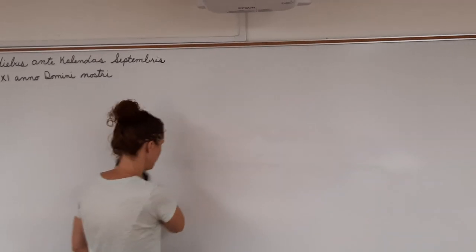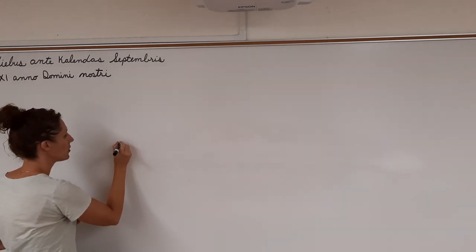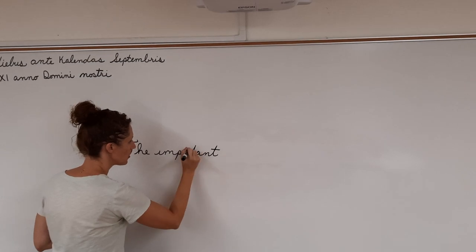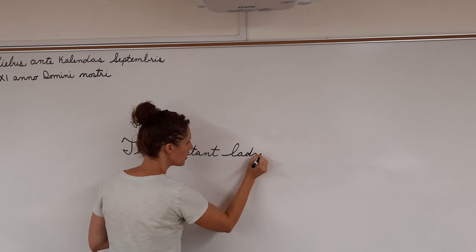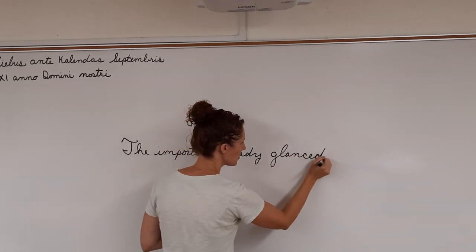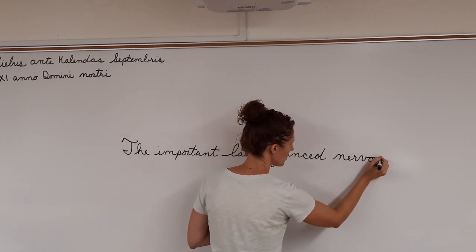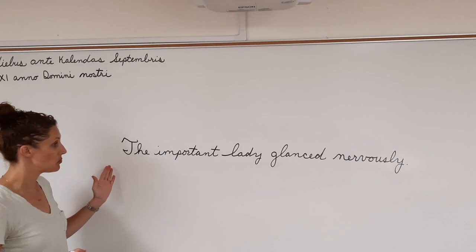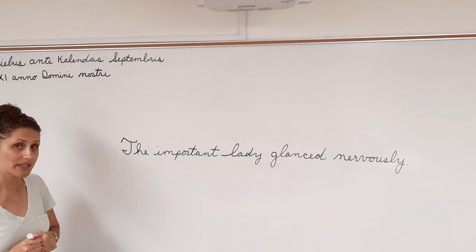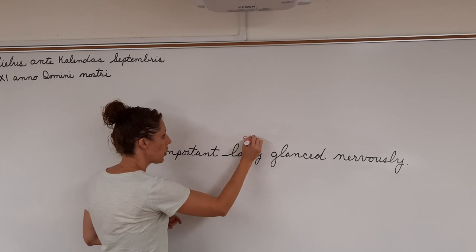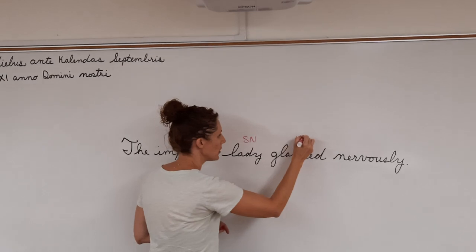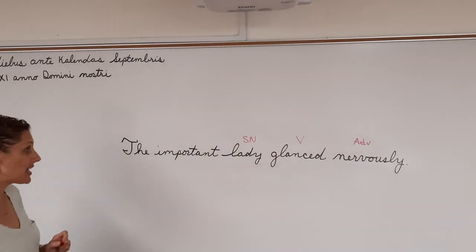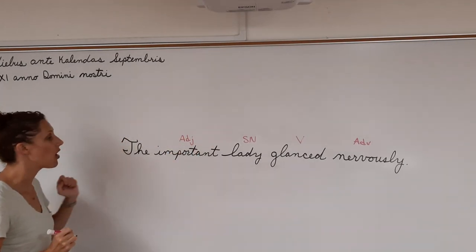Now let me give you a more complex one. Okay. See if you can do this with me out loud. Ready? Begin. The important lady glanced nervously. Who glanced nervously? Lady. Subject noun. What is being said about lady? Lady glanced. Verb. How did the lady glance? Nervously. Adverb. What kind of lady? Important. Adjective. The article adjective.